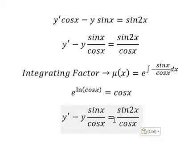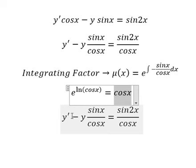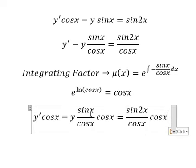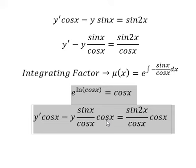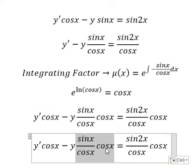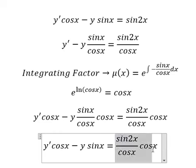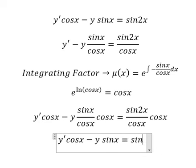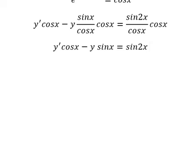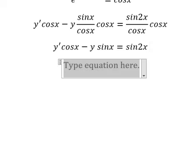So we multiply both sides by cosine x. This one we have sine x, this one we have sine 2x. Next we put the integration for both sides.